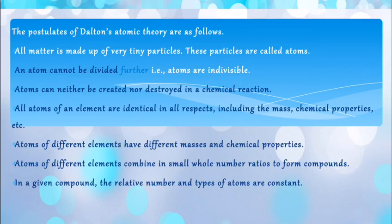Next, all atoms of an element are identical in all respects, including the mass and chemical properties. Atoms of different elements have different masses and chemical properties. Atoms of different elements combine in small whole number ratios to form compounds. In a compound, the relative number and type of atoms are constant.